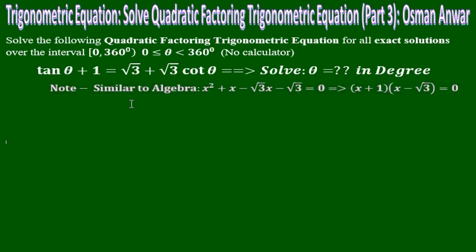This is similar to the algebra problem x squared plus x minus √3·x minus √3 equals 0, which can be factored as (x + 1)(x − √3) = 0. We'll see how.